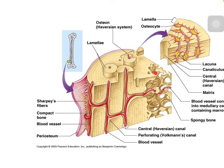The endostium lines the inner part of the compact bone and also the Volkmann's and Haversian canals, as mentioned in the previous lecture. We will discuss these structures again in the next few slides.